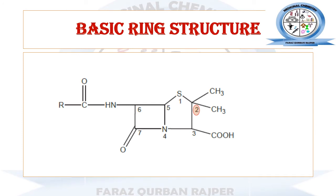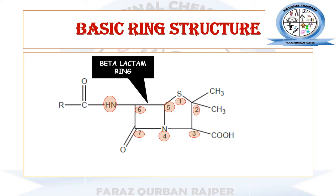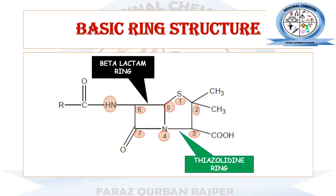Penicillin is basically consisting of the penem ring nucleus — the beta-lactam penem. It is a bicyclic ring structure composed of two heterocyclic rings. One ring is the beta-lactam ring, which is the four-membered heterocyclic ring essential for antibacterial activity. This beta-lactam ring is fused with the five-membered heterocyclic ring — the thiazolidine ring. The numbering of penicillin starts from the sulfur atom.